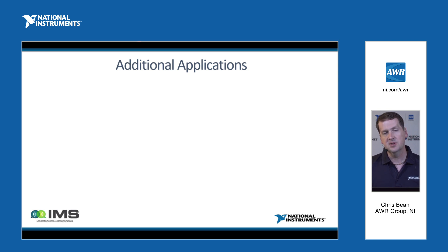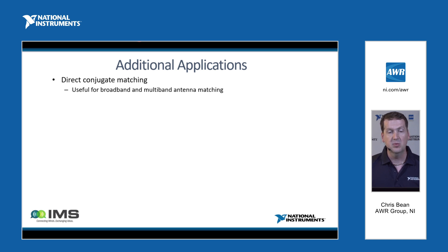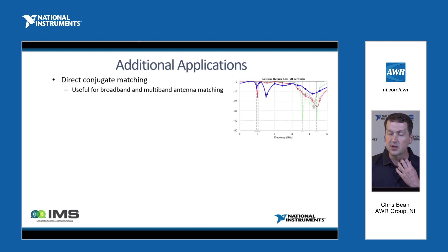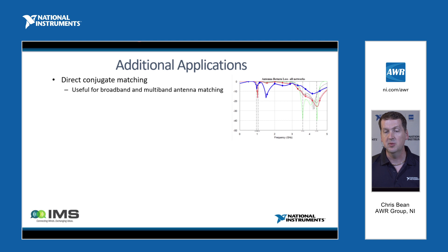For additional applications beyond power amplifiers: we also do direct conjugate matching, asking for minimized mismatch loss and synthesizing networks that are conjugate to the network you're matching to. This is useful for broadband and multiband antenna matching. We've got a graph of an antenna — the blue trace — pre-matched in a couple bands of interest centered around 1 GHz and 4 GHz, and we've synthesized networks that improve that match. Since we're synthesizing based on mismatch loss, you get lossless or very low loss networks that not only improve the match but deliver the most power possible to the antenna.